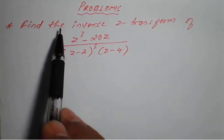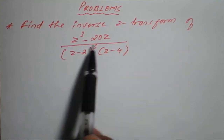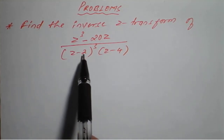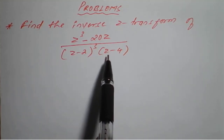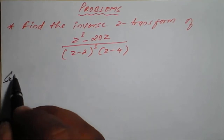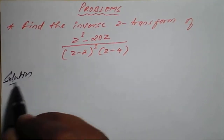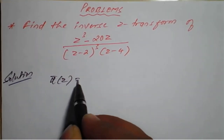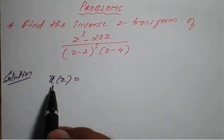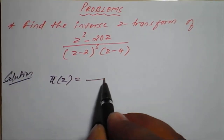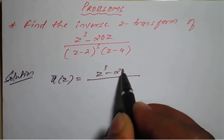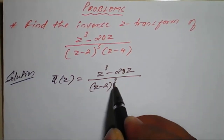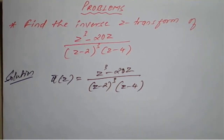The problem is to find the inverse Z-transform of (Z³ - 20Z) / [(Z-2)³ · (Z-4)]. This is an important question from an examination point of view. The given function U'(Z) equals Z³ - 20Z divided by (Z-2)³ into (Z-4).